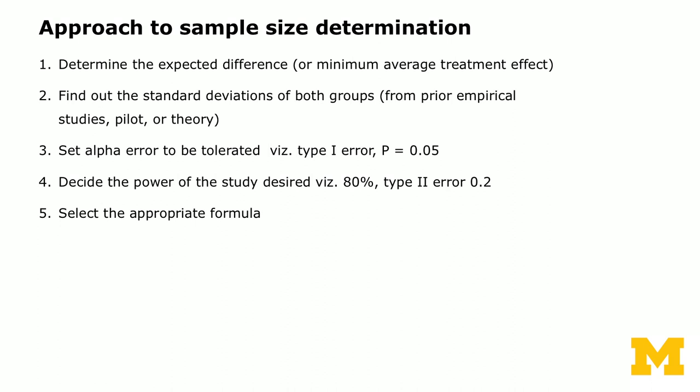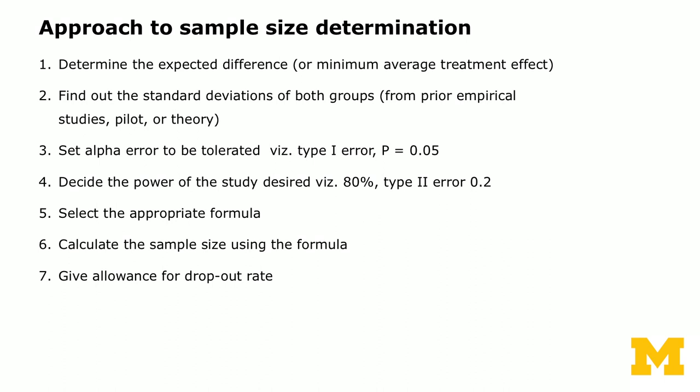You can have the statistical program output the sample size, or calculate it by hand. Finally, you need to allow for dropout rate — sometimes people enroll in a program and then drop out, so you must account for that — and perhaps allow for noncompliance with treatment. Those topics will be covered in week four.